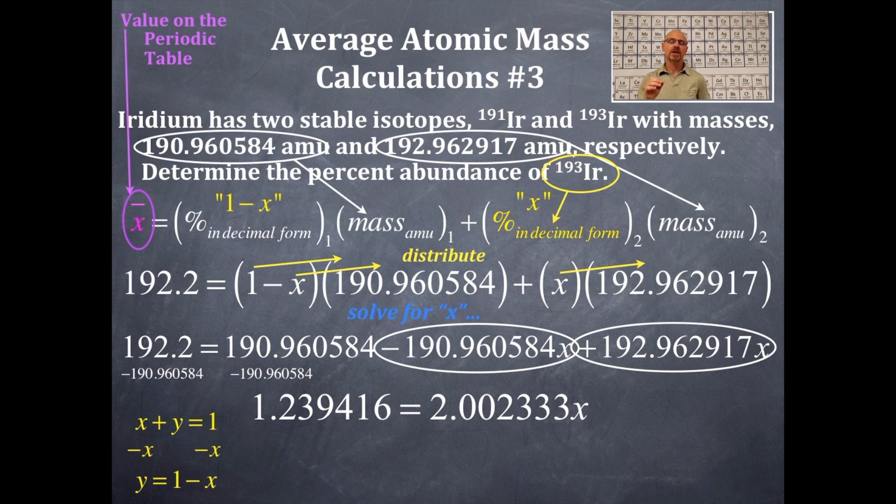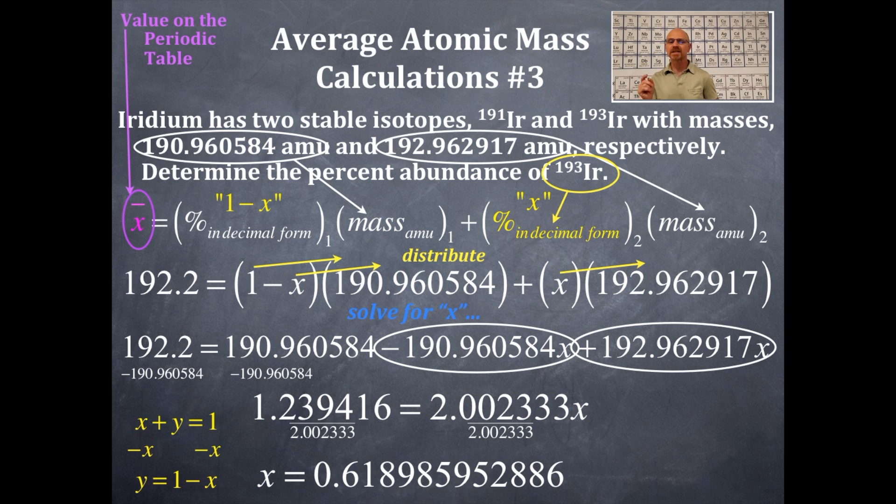Then, we're going to divide both sides by the coefficient in front of the x. That's the 2.00233, etc. So, we're going to divide by that. Then, x is going to be equaling this number. This is the number that's going to come off in my calculator here.